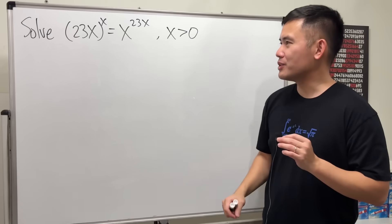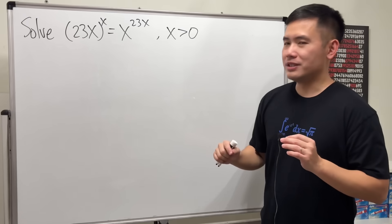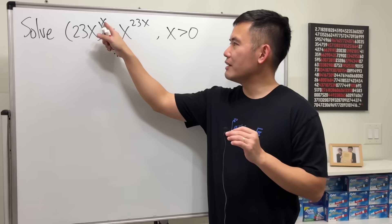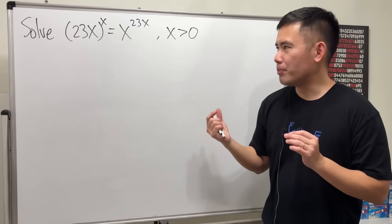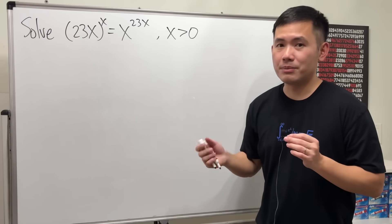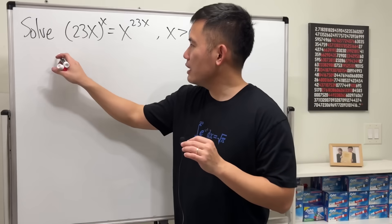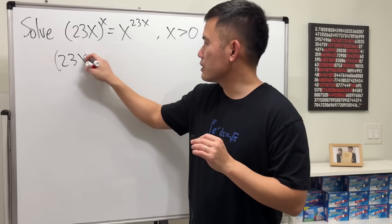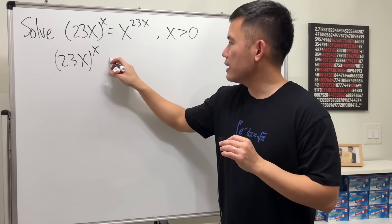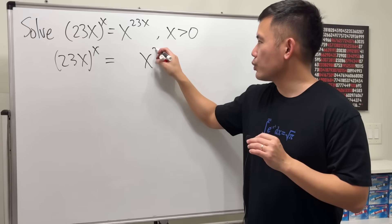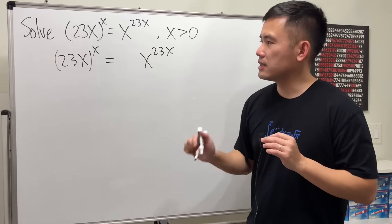But anyway, you do have this condition, so let's see how we can proceed here. Notice that we have x in the exponent, so perhaps our best bet is to take a logarithm on both sides. Let me just write this down again: (23x)^x = x^(23x).